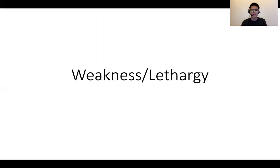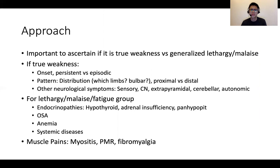We move on to the very dreaded group of weakness or lethargy. The first important thing is to ascertain whether this is true weakness or more generalized lethargy, malaise, or tiredness. If it is true weakness, think about: number one, the onset — whether it's persistent or episodic; number two, the pattern — distribution-wise, is it a hemiparesis, tetraparesis, or one limb involved; whether there are bulbar symptoms; and whether it's proximal versus distal. Then look for other neurological symptoms such as sensory symptoms, cranial nerve deficits, extrapyramidal, cerebellar, and autonomic dysfunction.